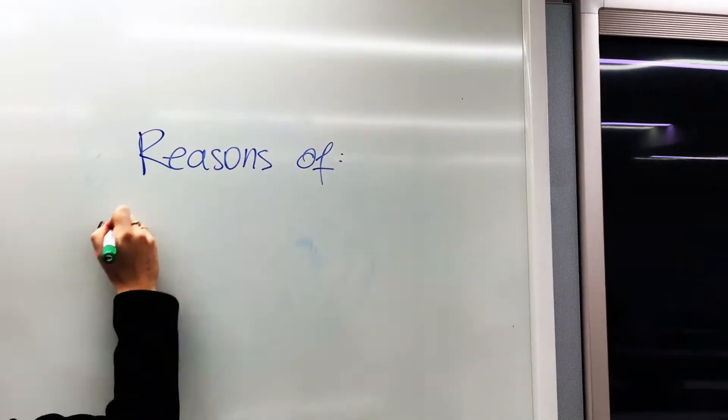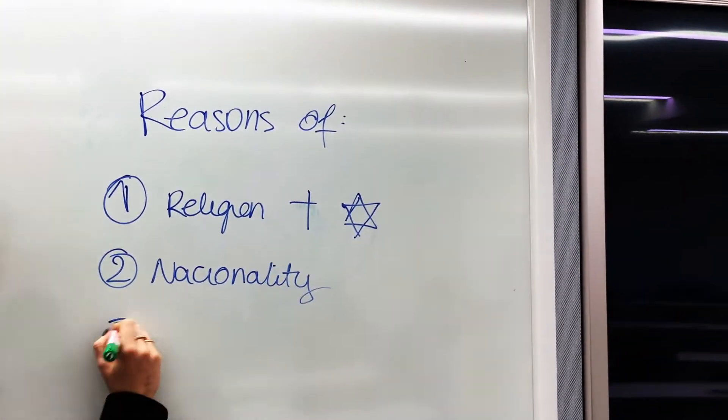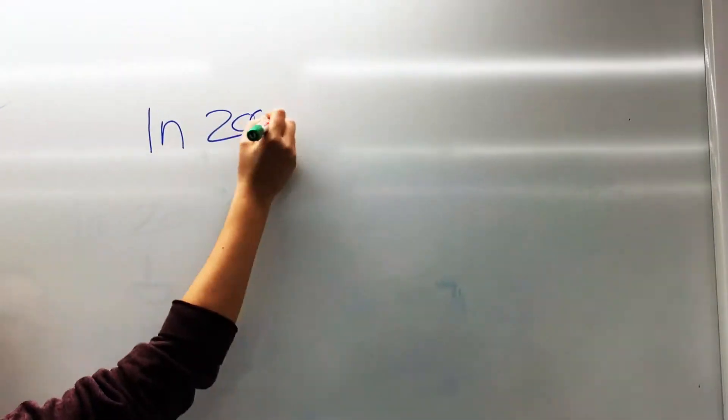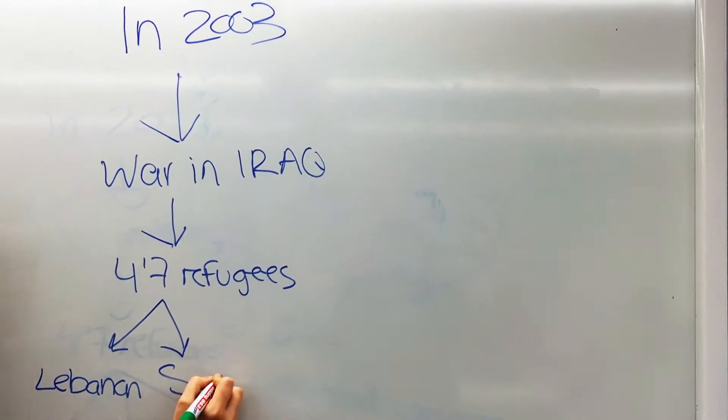A refugee is a person who leaves his country because of persecution, violence and war. The reasons for this are religion, nationality, race, and political opinions.